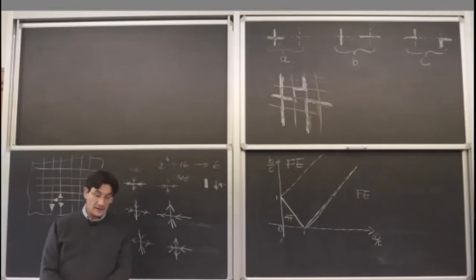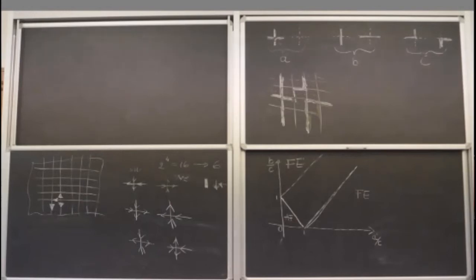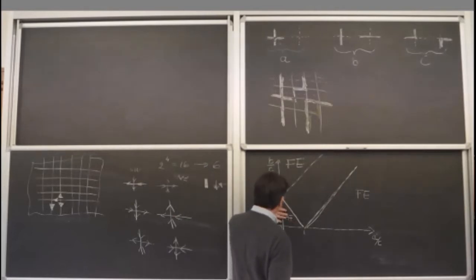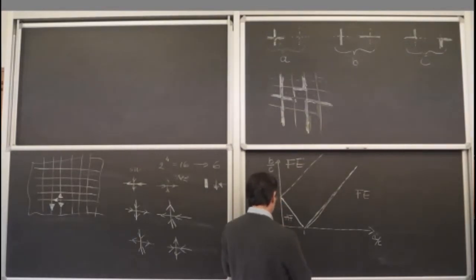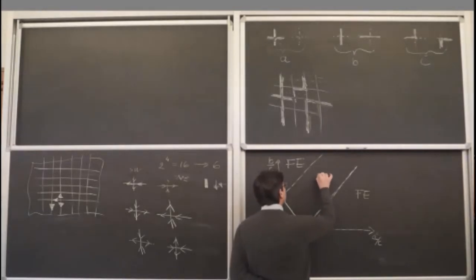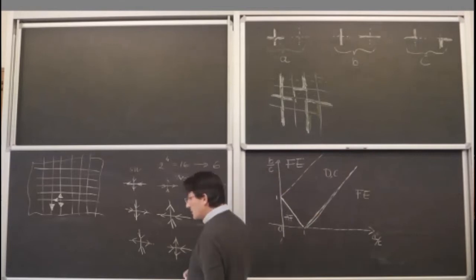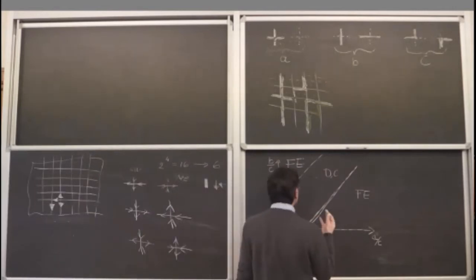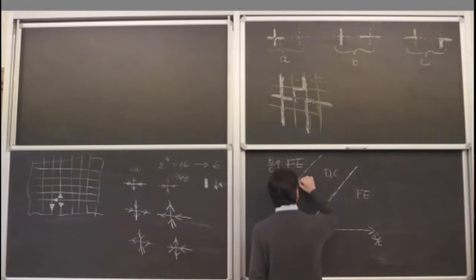The ferroelectric regions have exponential decay of correlation functions, and the one-point function has a non-zero polarization expectation value. In the antiferroelectric region, you again have exponential decay. The polarization has zero expectation value, but a staggered polarization is non-zero. And there is a disordered or critical region: disordered in the sense that polarization is zero, and critical in the sense that correlation functions decay algebraically — so it's a whole critical region, not just a critical point.